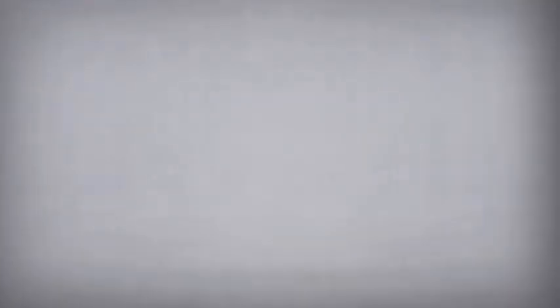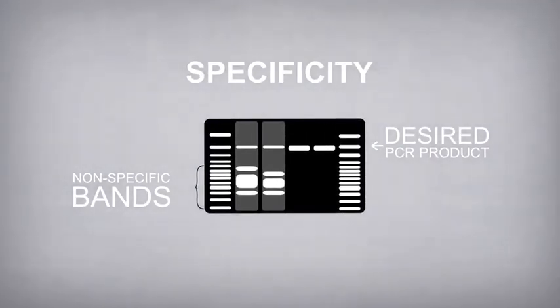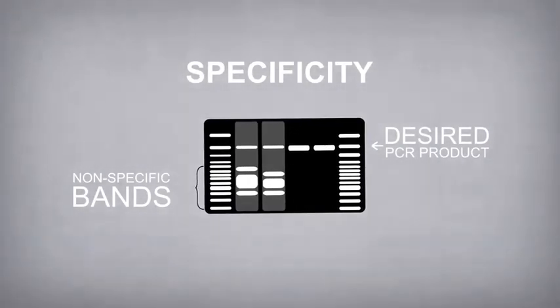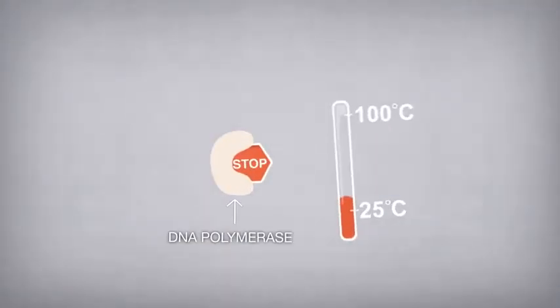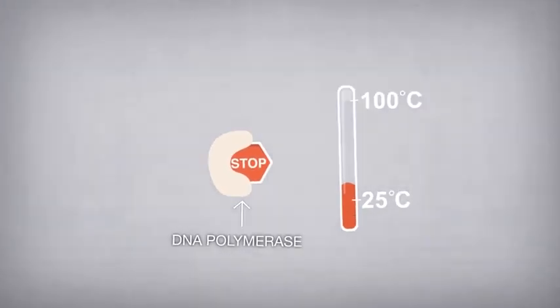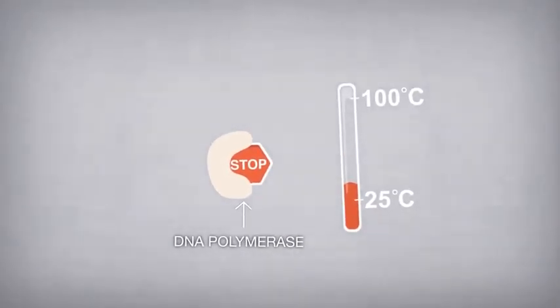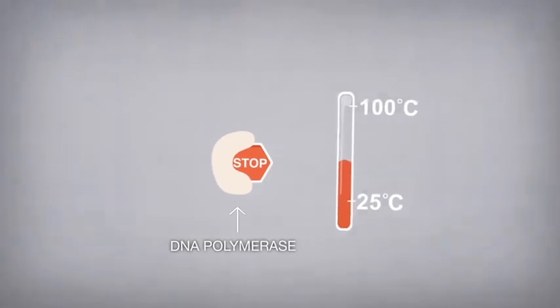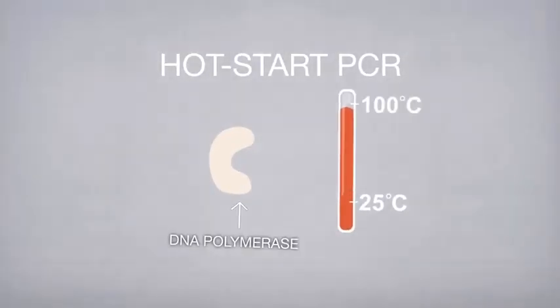One common issue encountered in PCR is low specificity or background amplification. PCR specificity can be improved by modifying DNA polymerases to be inactive at room temperature during reaction setup but activated at a higher temperature at the start of PCR cycling. This approach is commonly known as hot start PCR.